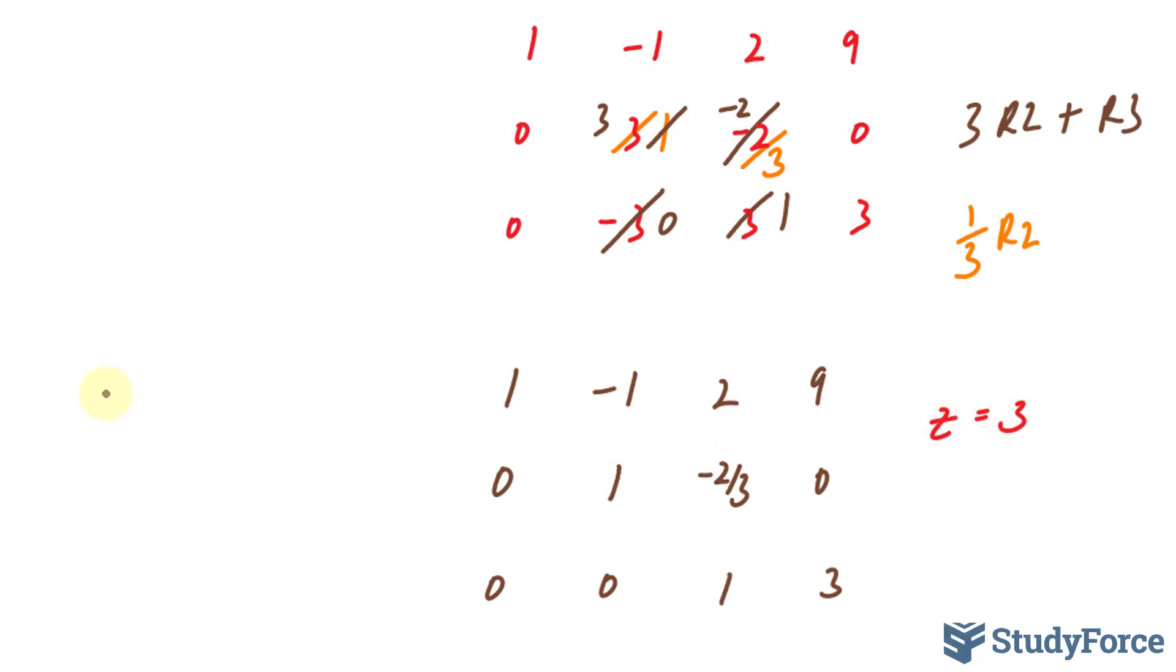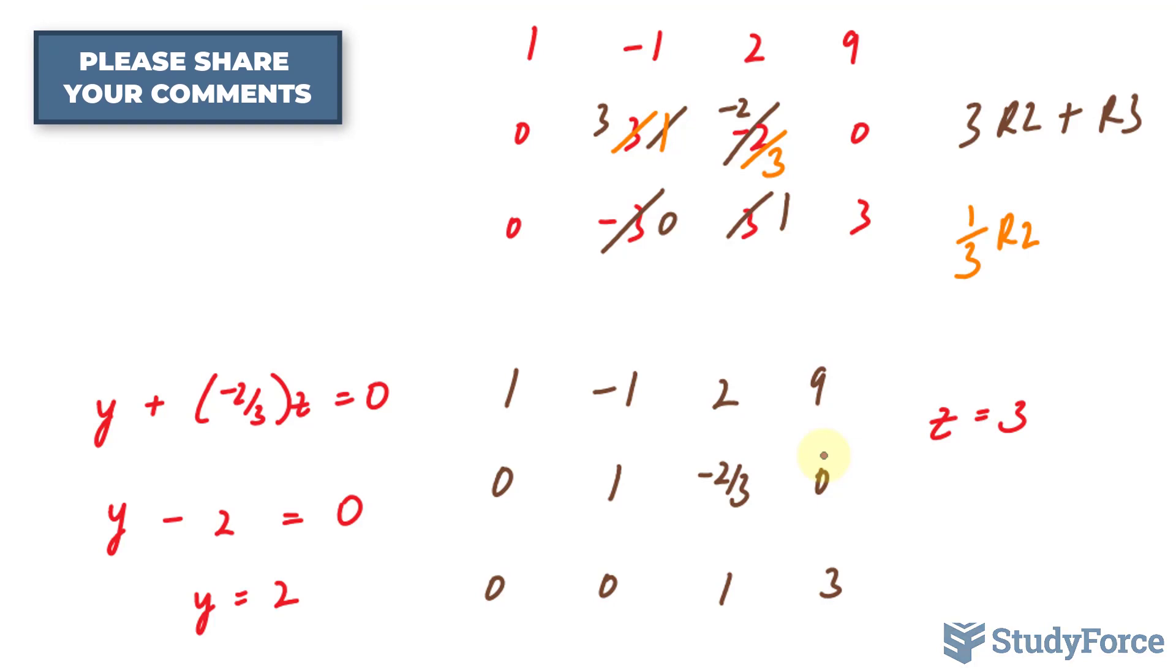This row tells us that y plus negative 2 over 3 z is equal to 0. By substituting 3 into here, we end up with y minus 2 is equal to 0, and solving for y is easy. This gives us positive 2. This is what is referred to as back substitution. We're finding out what z is and then substituting back into another equation.